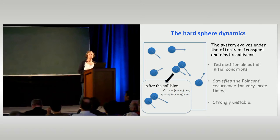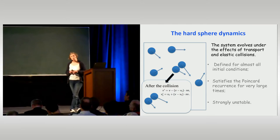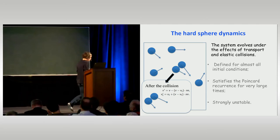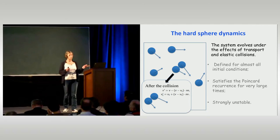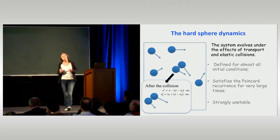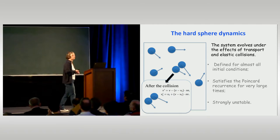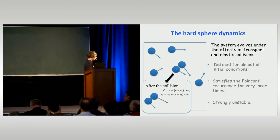This system is very simple. What you can prove is that, of course, it preserves the total kinetic momentum and the total energy. Actually, it is well defined globally in time for almost all initial configurations, whatever the number of particles. I just assume that the particles evolve in a simple geometry, the torus, so there is no boundary condition and just flat geometry. Then you have the property that the flow is well defined for almost all initial conditions.